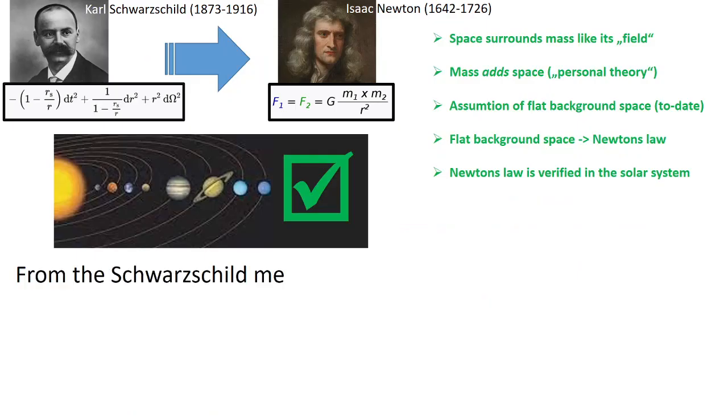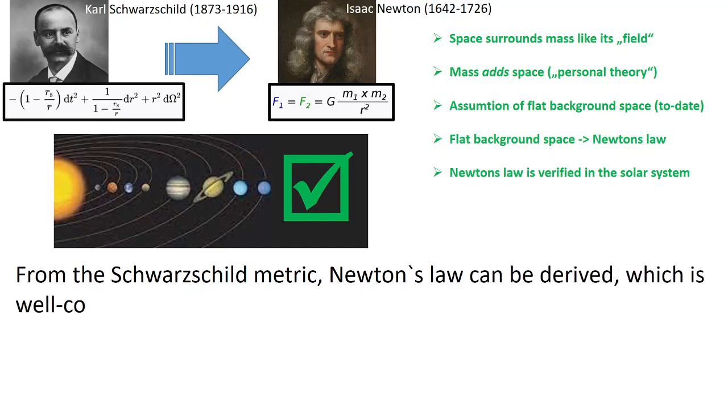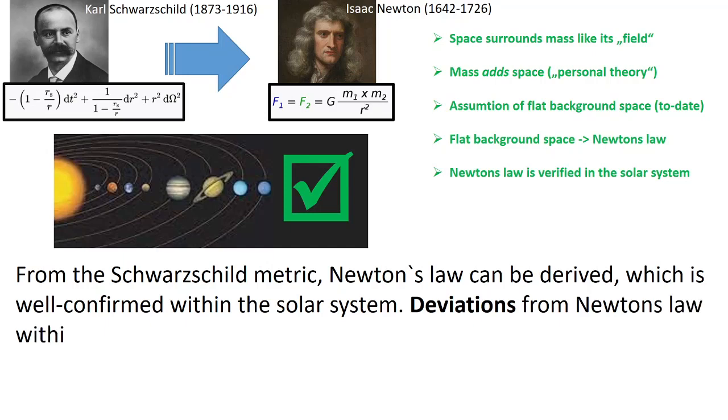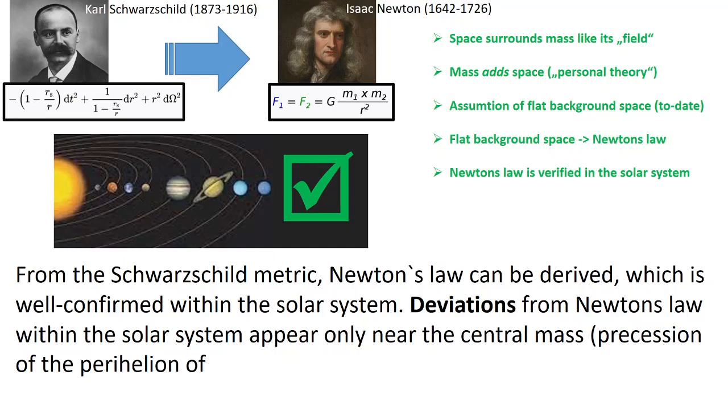From the Schwarzschild metric Newton's law can be derived, which is well confirmed within the solar system. Deviations from Newton's law within the solar system appear only near the central mass, precession of the perihelion of Mercury.